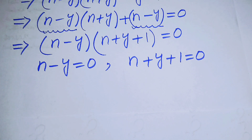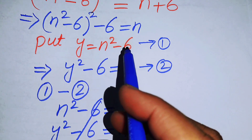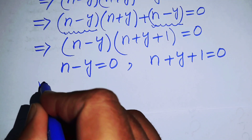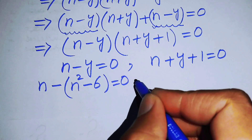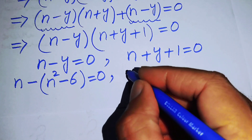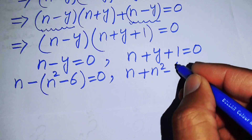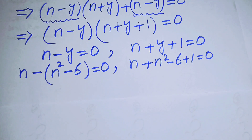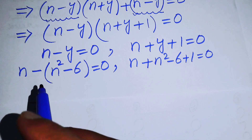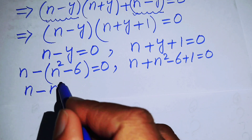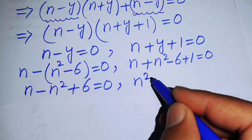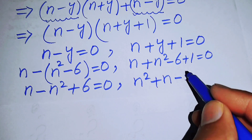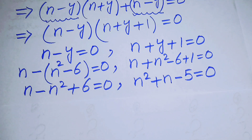We back-substitute y = n² - 6. For Case 1, n - (n² - 6) = 0 gives n² - 6 = 0, so n² - n - 6 + 1... For Case 2, n + (n² - 6) + 1 = 0, which simplifies to n² + n - 5 = 0.